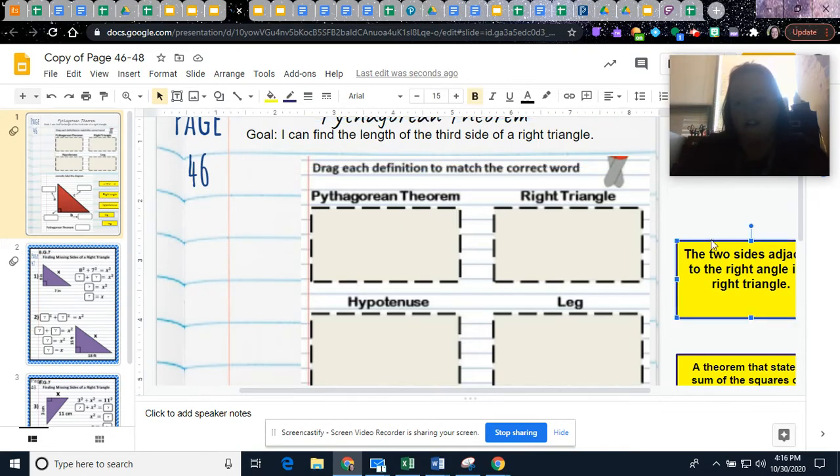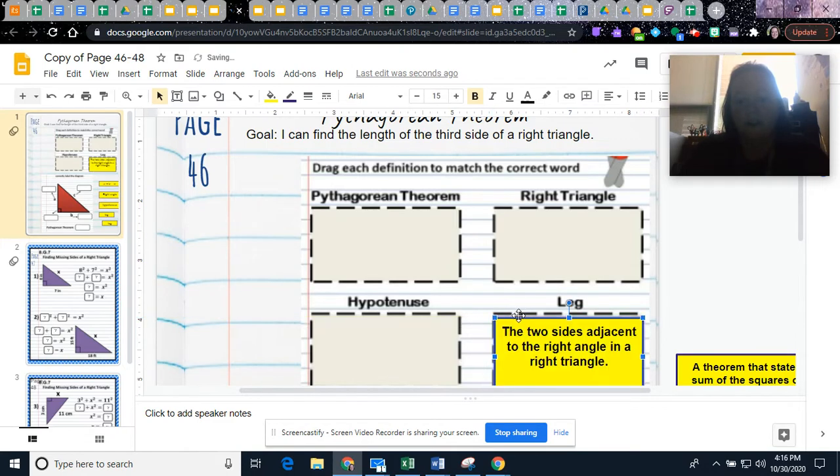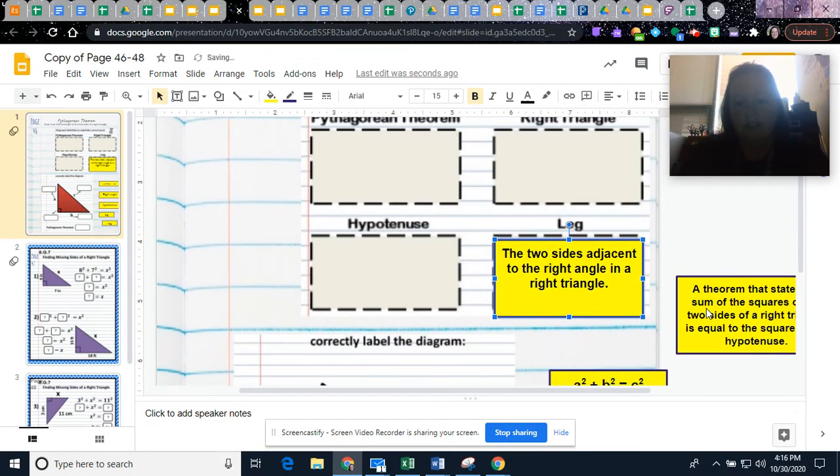This one says the two sides adjacent to the right angle in a right triangle. So the two sides that are adjacent to the right angle, those are going to be your legs. If you look here, like this would be the right angle. So your two legs are the ones that make a 90 degree angle.